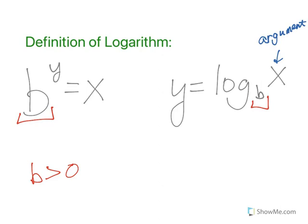And then this here we call the argument of a logarithm. I always look at it this way: in the logarithm, x, the argument, is on the same side of the equal sign as the base. In the exponential, y is on the same side of the equal sign as the base.